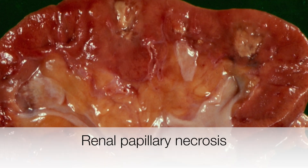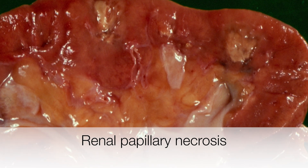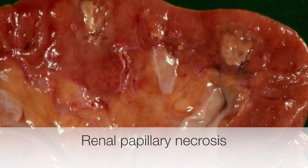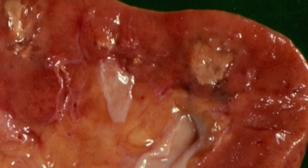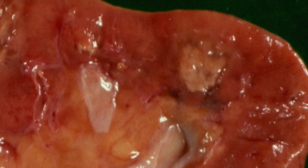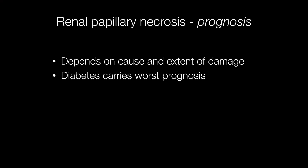Here is a slice of kidney showing the typical appearances of renal papillary necrosis, with the yellow-grey areas sharply defined from the adjacent medulla. The prognosis depends on the cause and extent of the damage to the kidneys, with diabetes being associated with a particularly poor prognosis.